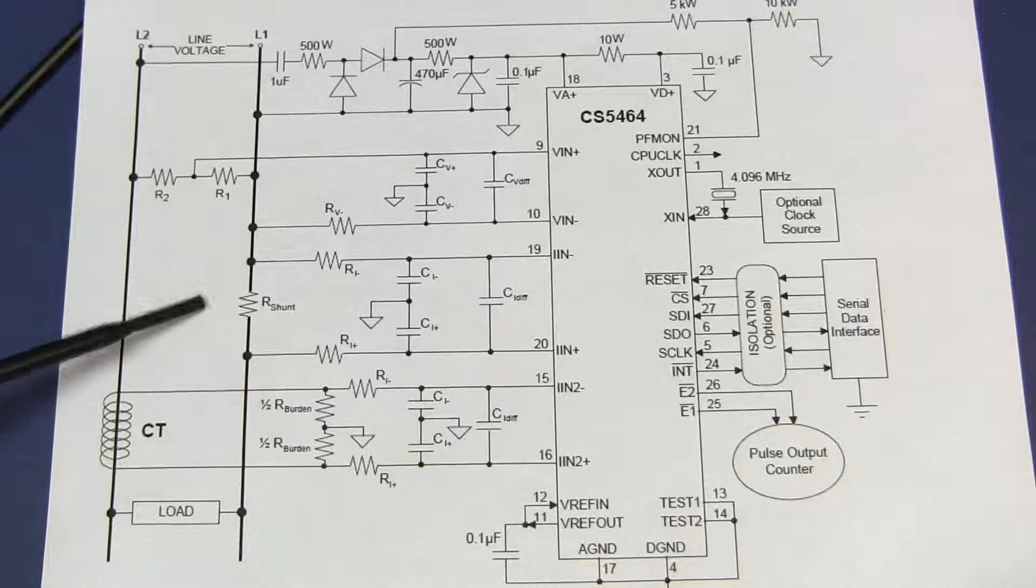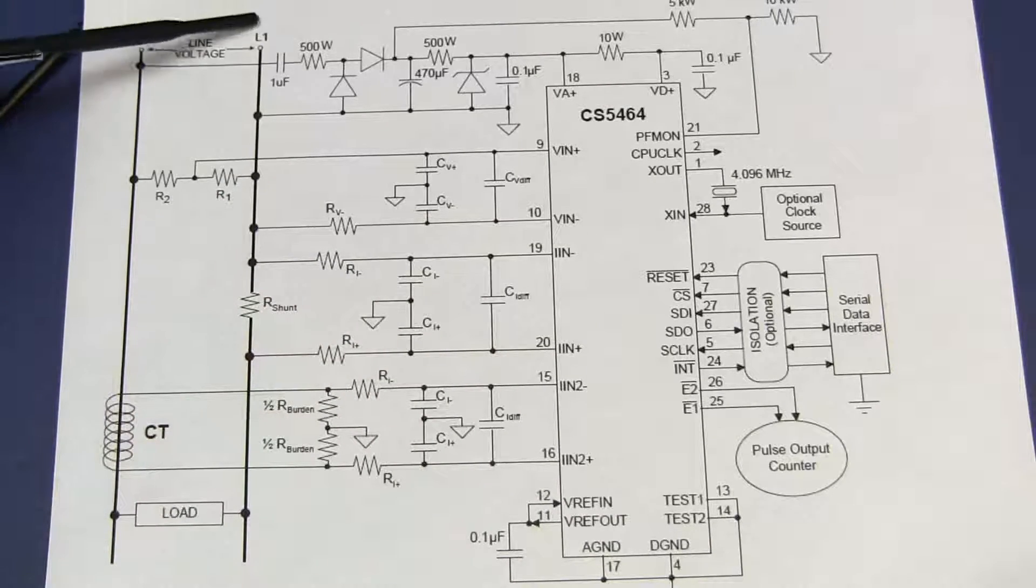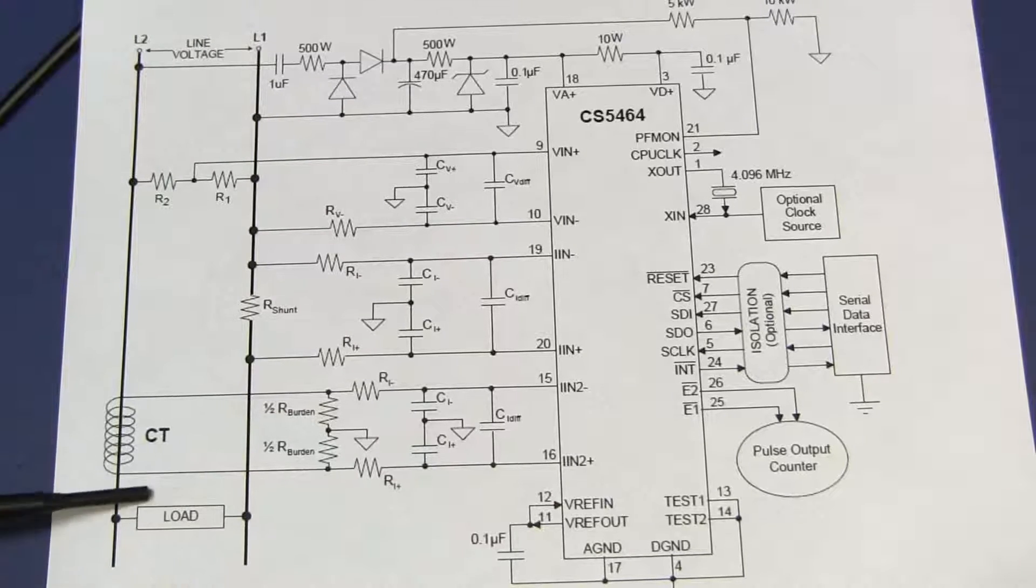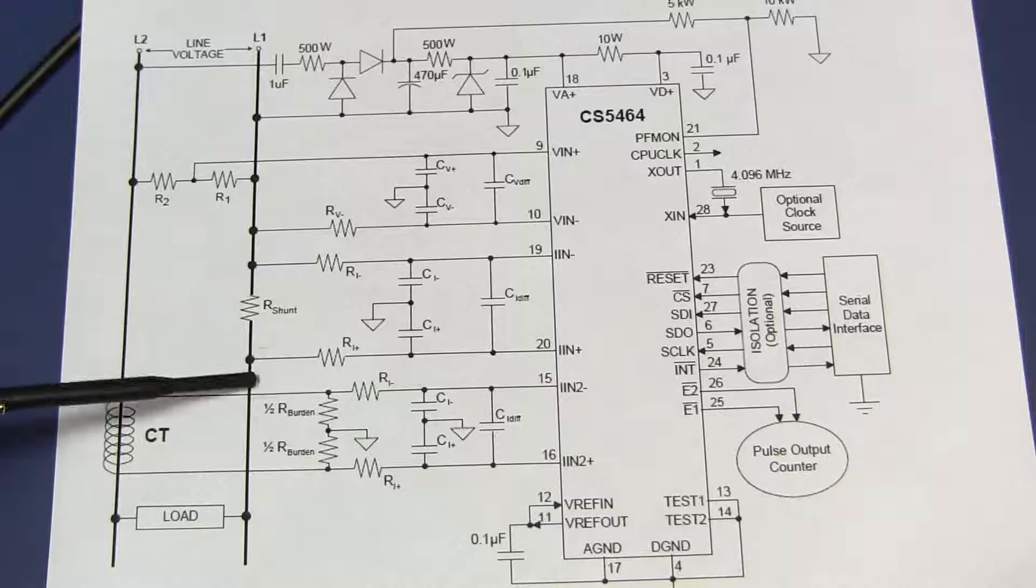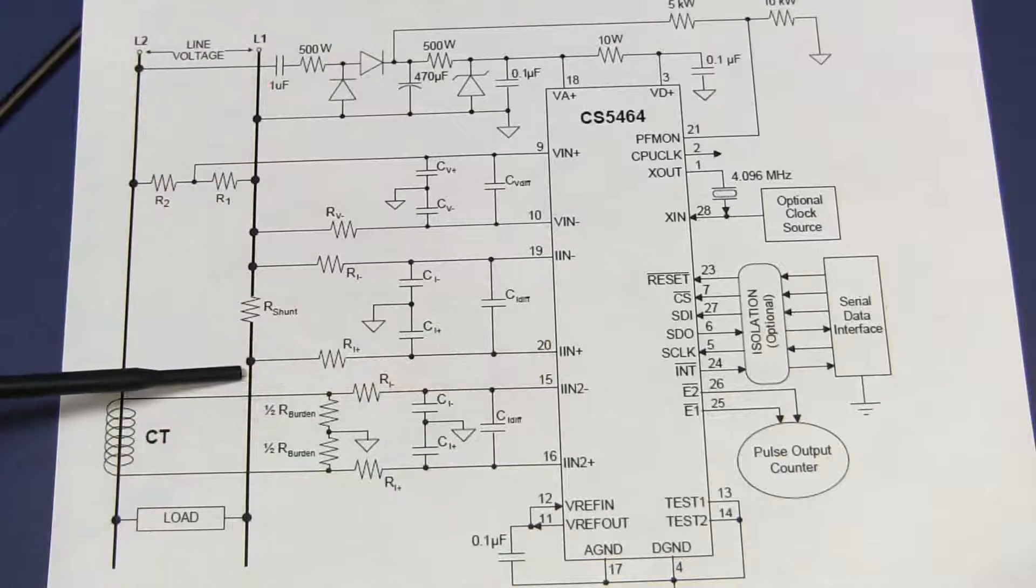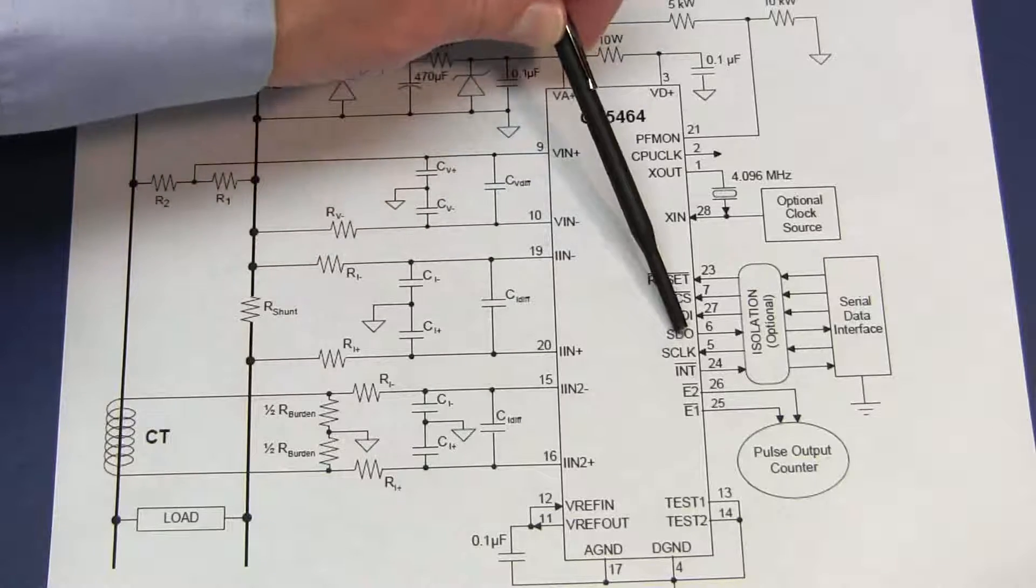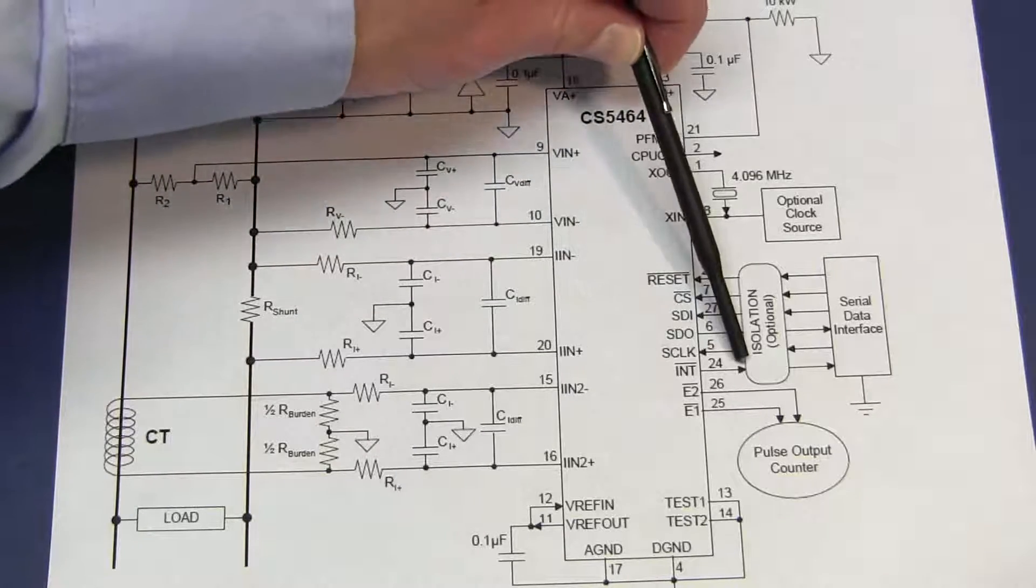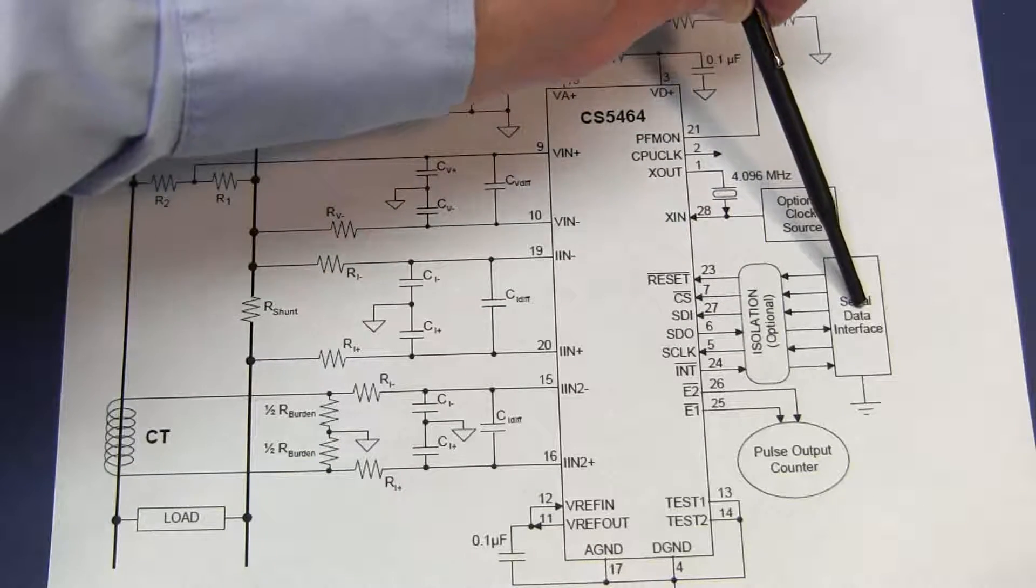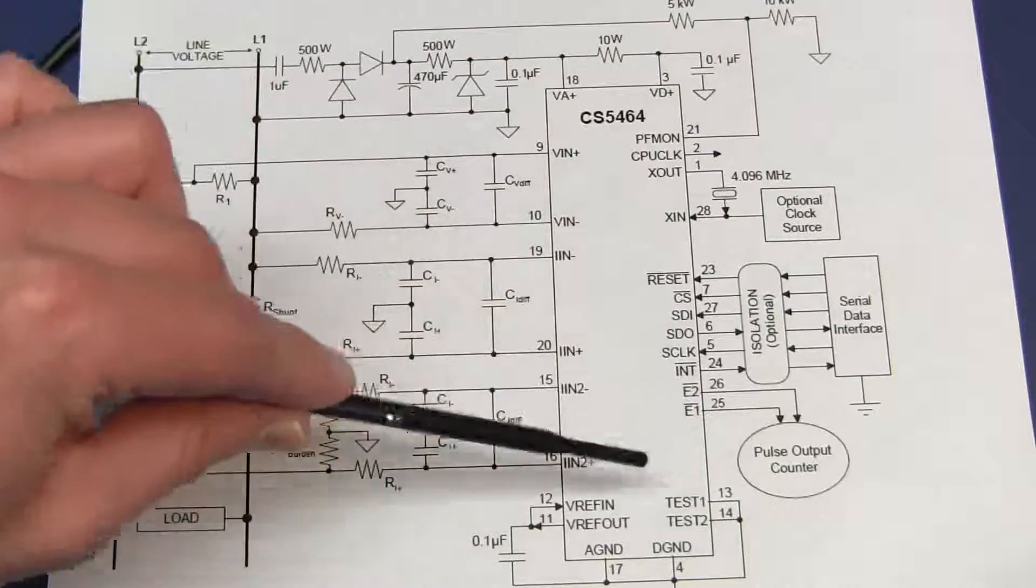We'll be implementing this basic shunt test right here. So our current will come in from the phase and neutral through the shunt to a load, and we will then tap off the shunt through a pair of resistors and into the CS5464. You can see that the line power is coupled directly into the chip and then the chip does its work and the communication goes out via SPI. Here's the optional isolation mentioned earlier and then it'll be off to the microcontroller here. We won't worry about the pulse output counters on this.